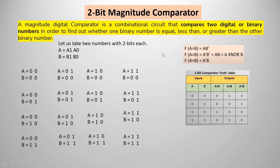To develop this magnitude comparator circuit diagram, the general design procedure is: first, develop the truth table; then find the simplified boolean expressions with the help of K-maps for output variables; after that, draw the logic diagram. But for the 2-bit magnitude comparator, this design procedure is a little bit lengthy, so we take logic from the 1-bit magnitude comparator and easily write the boolean functions without using the truth table and K-maps.